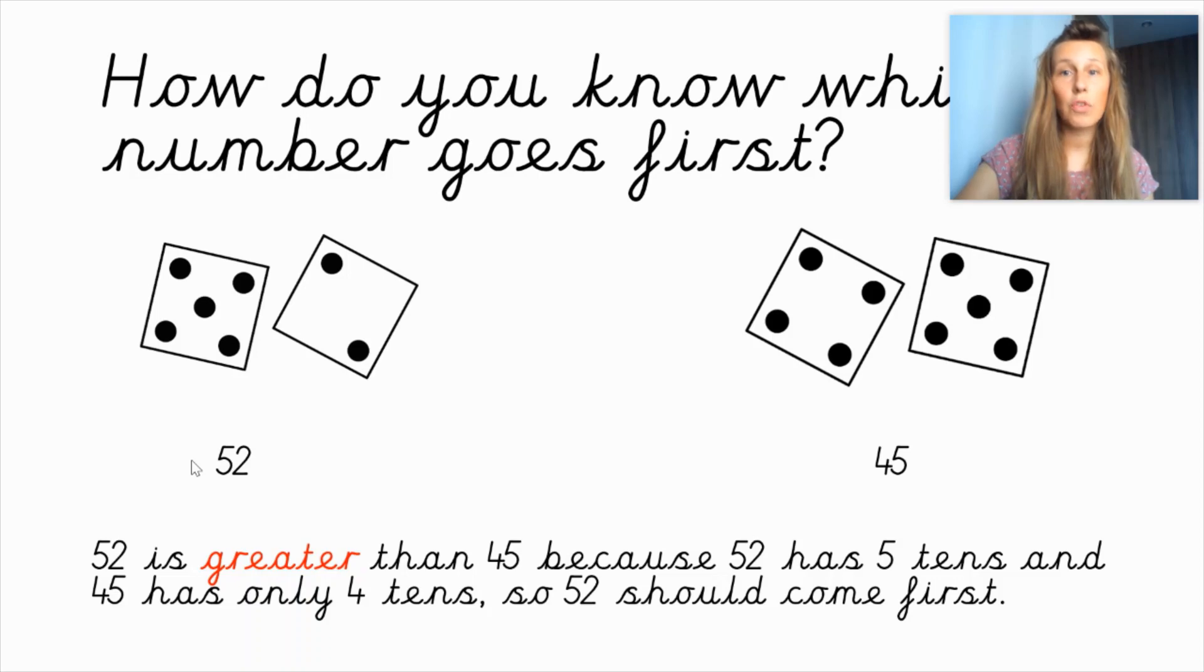Well, then, I'm gonna roll the dice again. When I roll it for the second time, I've got two digits here. The first die shows me four tens and five ones. So, the number that has got four tens and five ones is number forty-five. So, I have got two numbers. I've got fifty-two and I've got forty-five.